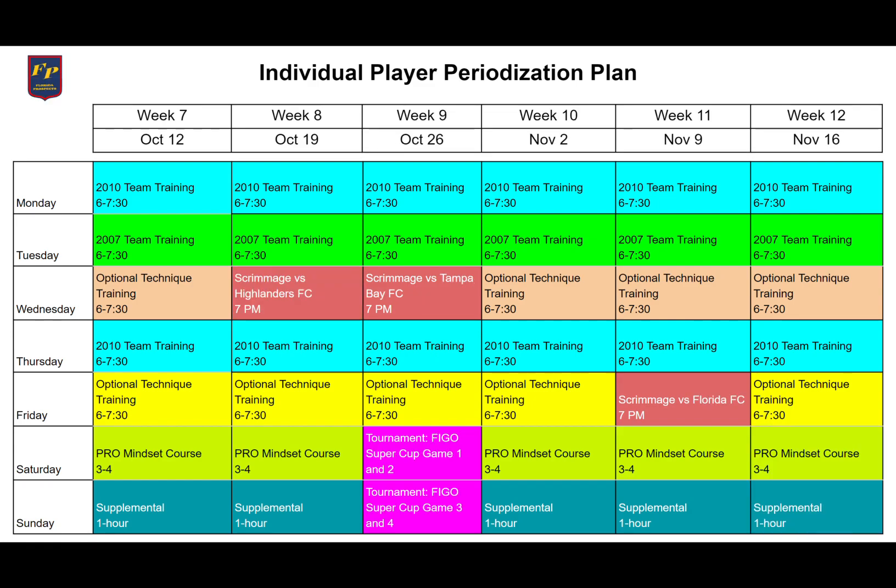Here's the second period — weeks seven through twelve, from October 12th to November 16th. It's another six weeks with the same type of setup, covering the second set of six weeks.